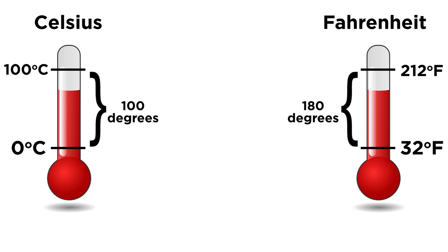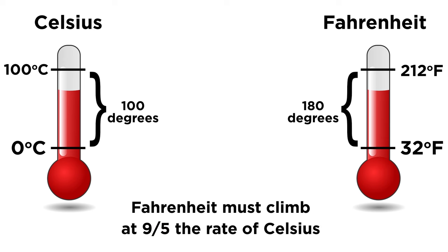So to understand how to convert between these, we must realize that Fahrenheit climbs a hundred and eighty degrees in the same space that Celsius climbs a hundred, which requires that Fahrenheit temperatures climb at nine-fifths the rate of Celsius temperatures. But there is also a thirty-two degree discrepancy in where these segments begin, and this also has to be accounted for.